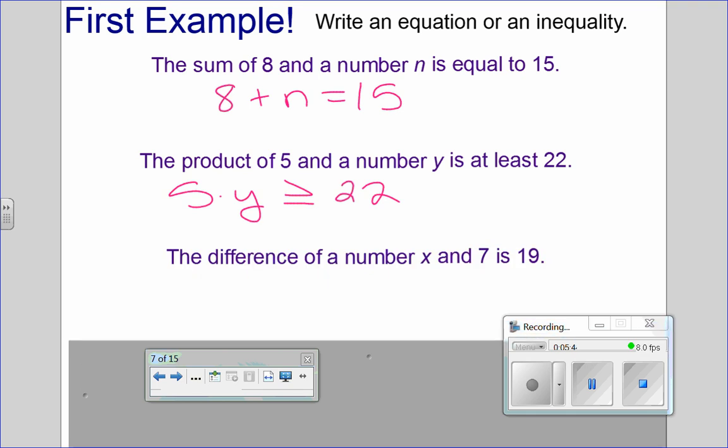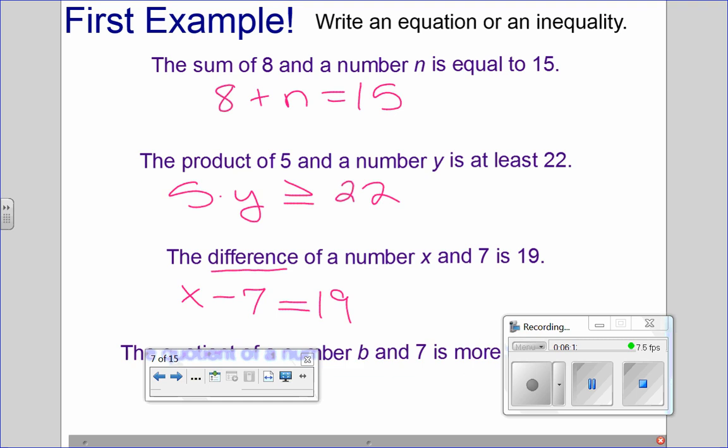The difference of a number X and 7 is 19. The difference of a number X and 7 is 19. Who's got it? Kenneth. Did you say divided by? Where do you subtracting? Difference means subtracting. So, X minus 7, and then what are you going to do? 19. X minus 7 equals 19.